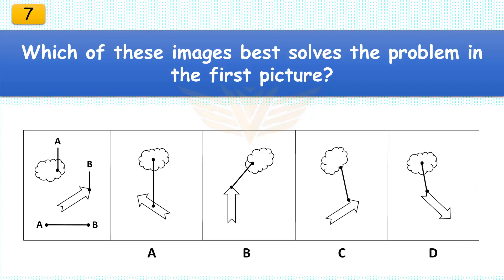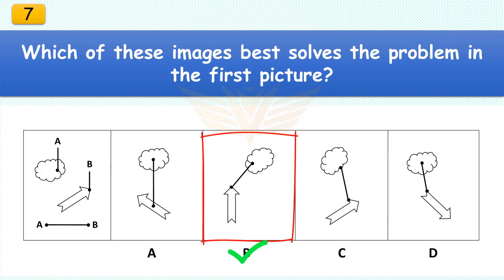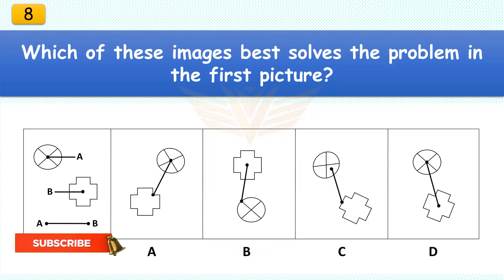Which of these images best solves the problem in the first picture? The correct answer is B. Rotate the cloud object 180 degrees and rotate the notched arrow 45 degrees to the left.